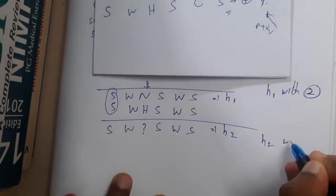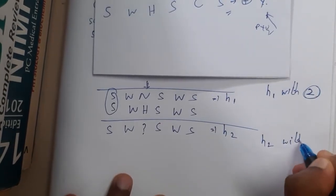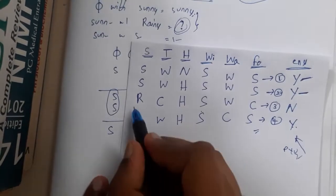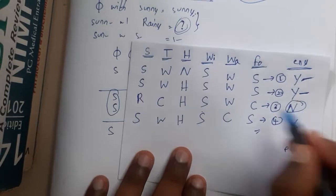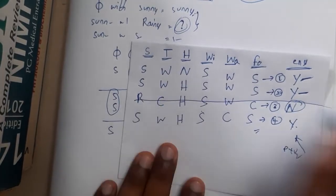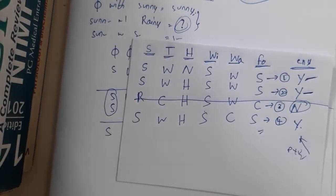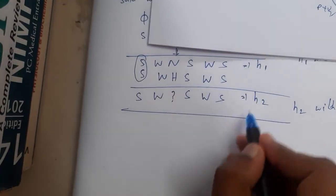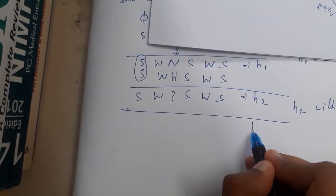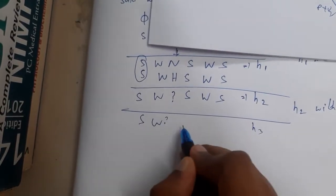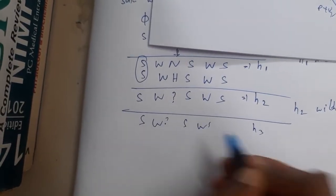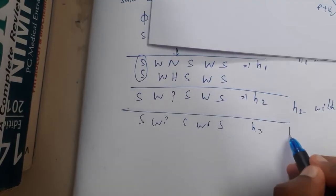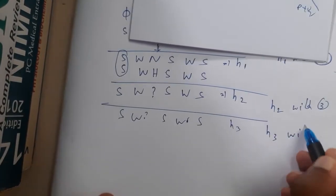Comparing h2 with row 3 — row 3 has output 'no', so it is a negative example. We skip it directly. Therefore h3 remains the same as h2: (sunny, warm, ?, strong, warm, same).